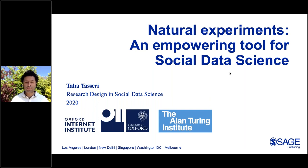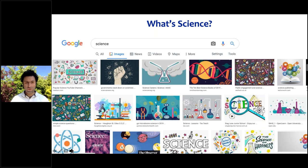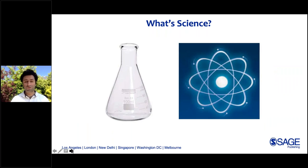As most of us do these days, to find the answer to any question, we go to Google. I'm lazy, particularly when it comes to reading, so I just searched images that Google finds when the query is science. If you Google science and search for images, these are the top images that Google brings up. Having looked at this, apparently science is two objects: an Erlenmeyer flask and a very misleading picture of an atom, which as an ex-physicist I know is quite unrealistic.